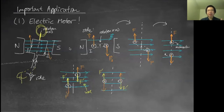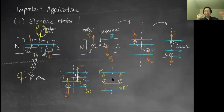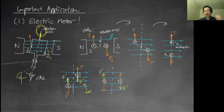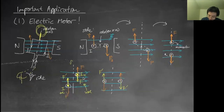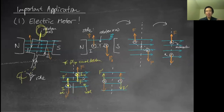To flip the current automatically every half turn, you program an alternating current source. This is an AC motor. The way to avoid wire tangling as the loop rotates is to use slip rings: each side of the loop is welded to a separate ring on the rotation axis. Brushes contact these rings and carry current in from an AC source, so every half turn the current direction automatically reverses.